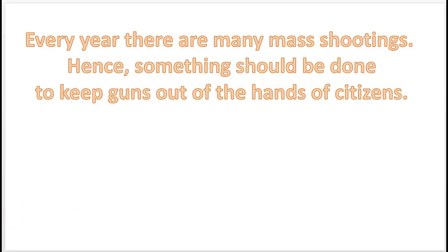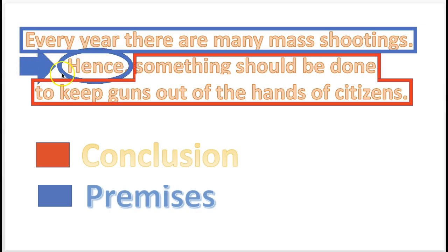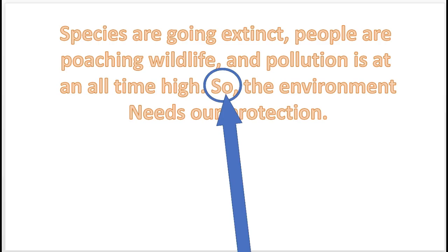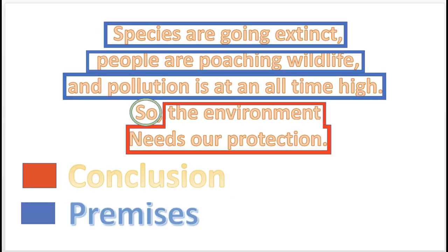Here is another practice problem: 'Every year, there are many mass shootings. Hence, something should be done to keep guns out of the hands of citizens.' The conclusion indicator word is 'hence,' and the conclusion follows in the red box; the premise is in the blue box. Next: 'Species are going extinct. People are poaching wildlife. And pollution is at an all-time high. So, the environment needs our protection.' The conclusion indicator word is 'so.' There are three premises in the blue squares and the conclusion in the red square.